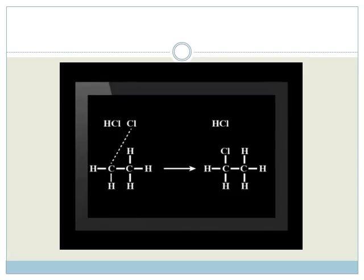Once that happens, the remaining chlorine and carbon atoms bond. This makes the product chloroethane. Let's go to the lab to see some substitution reactions.